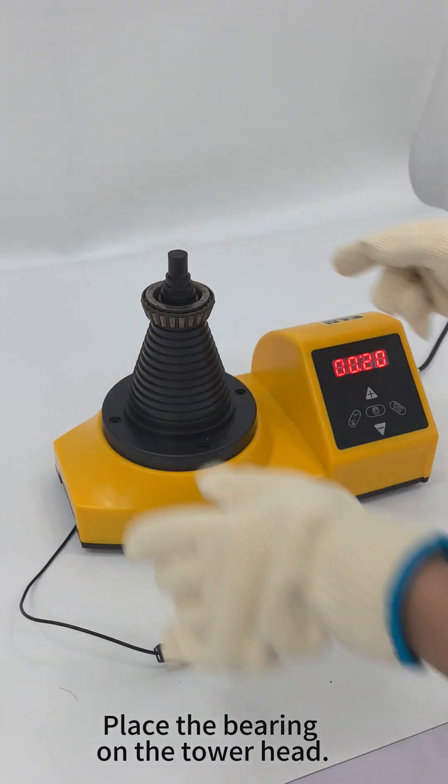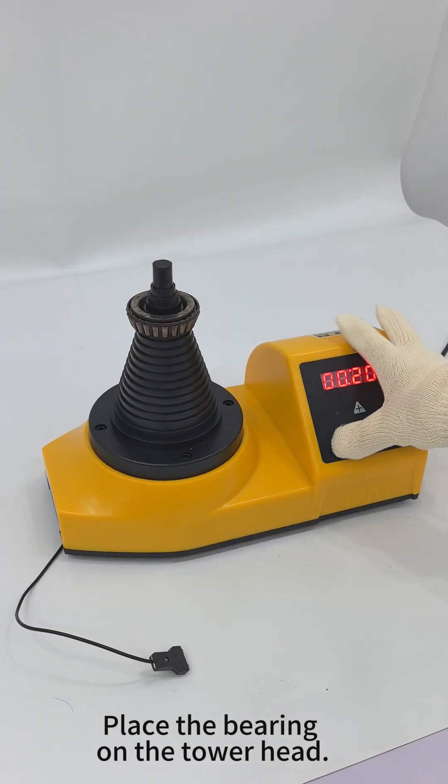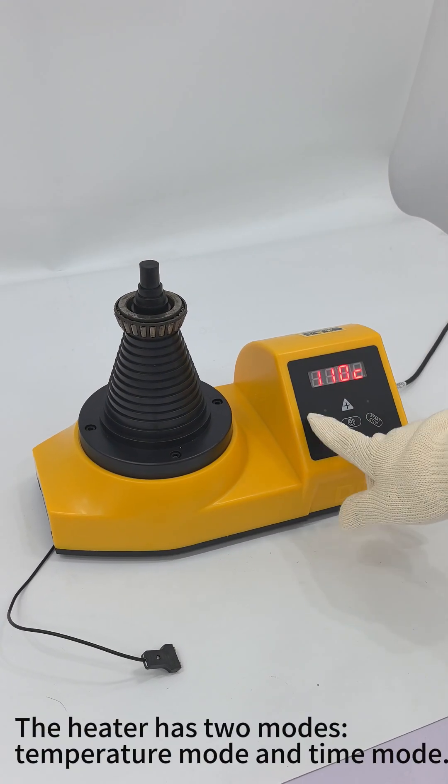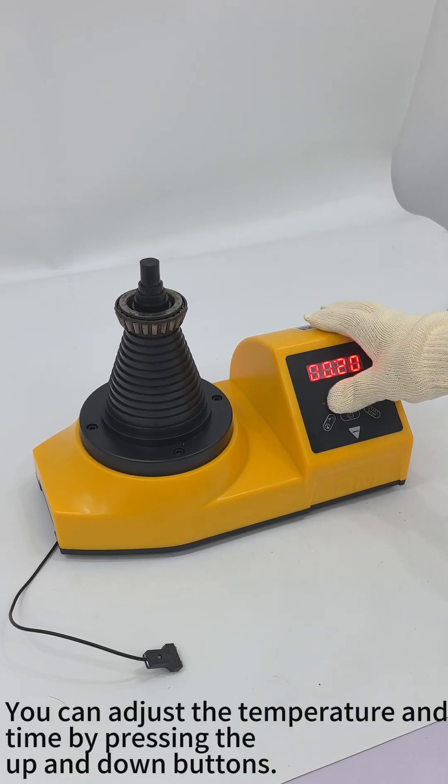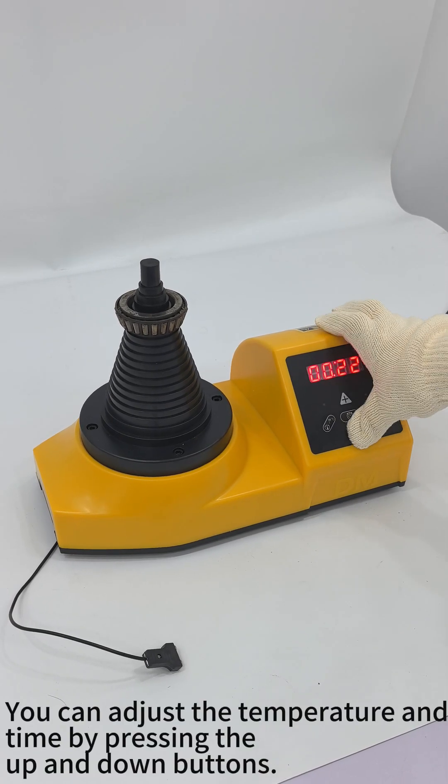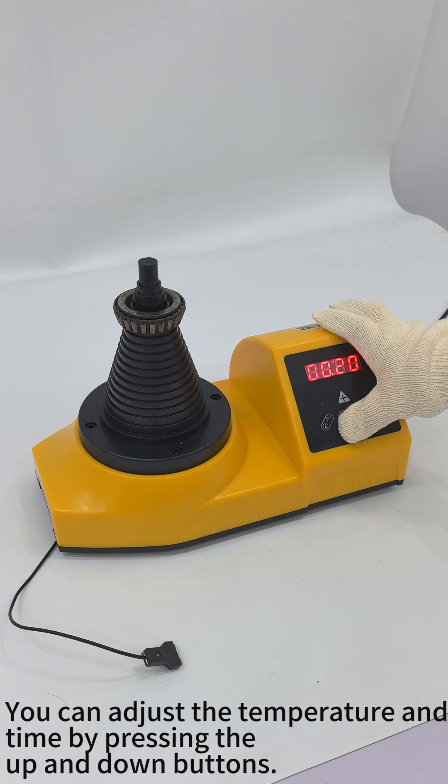Place the bearing on the tower head. The heater has two modes: temperature mode and time mode. You can adjust the temperature and time by pressing the up and down buttons.